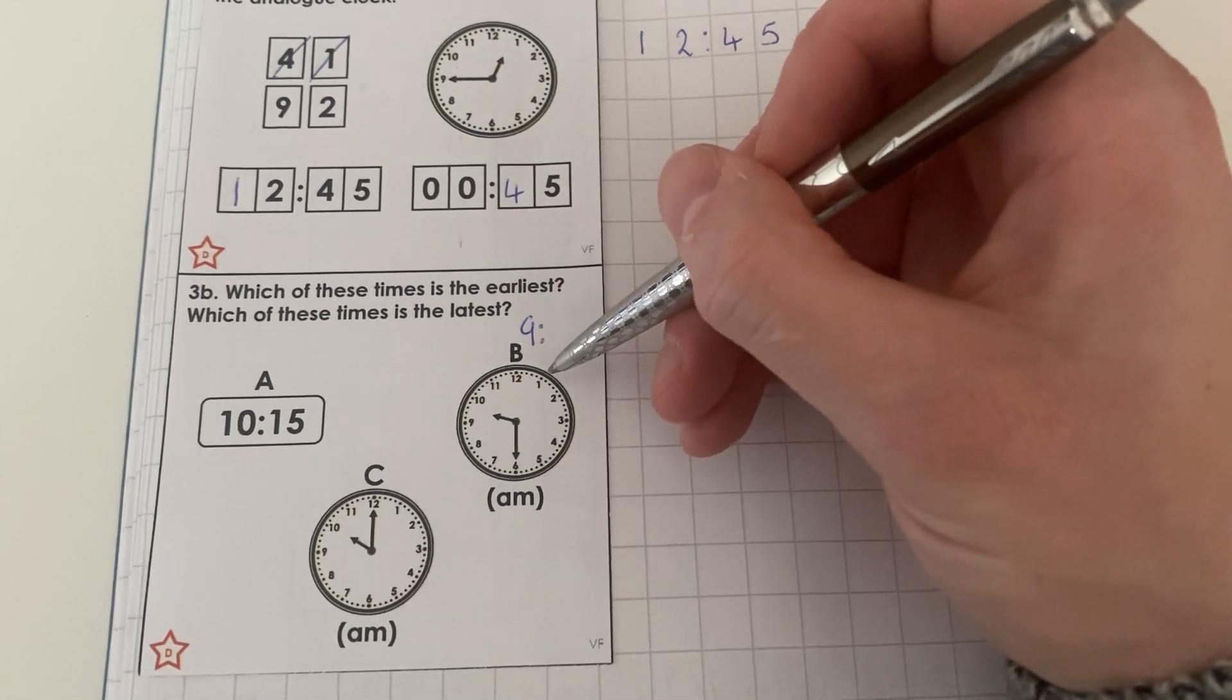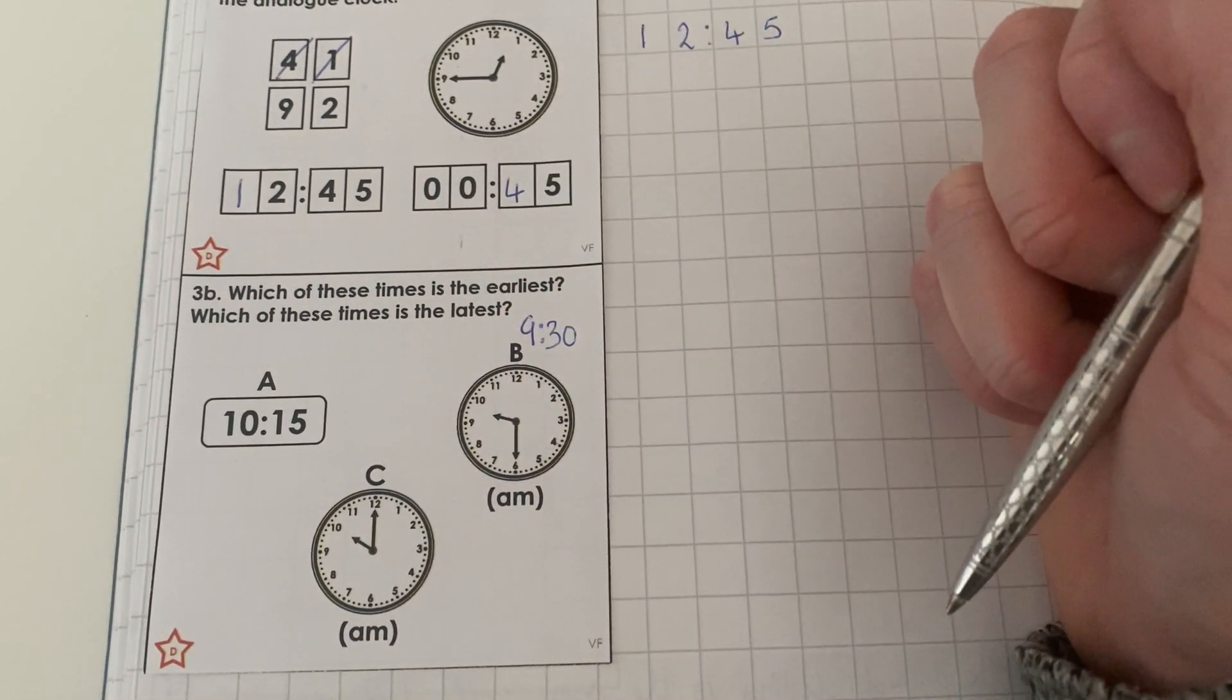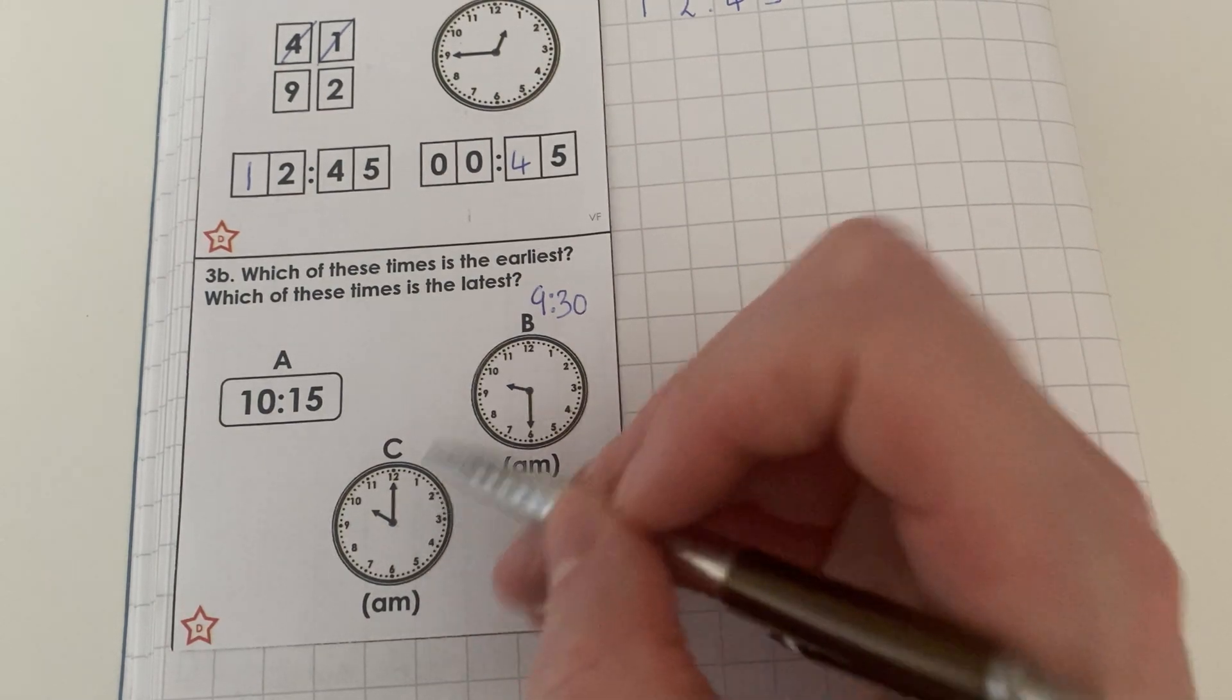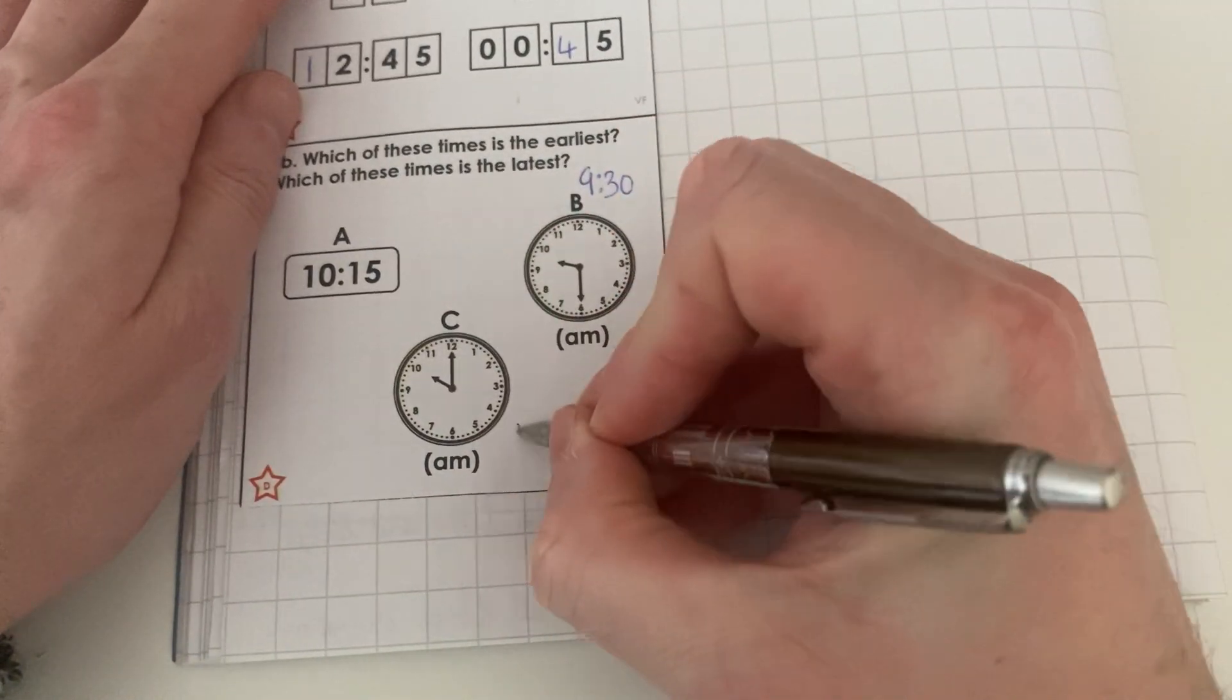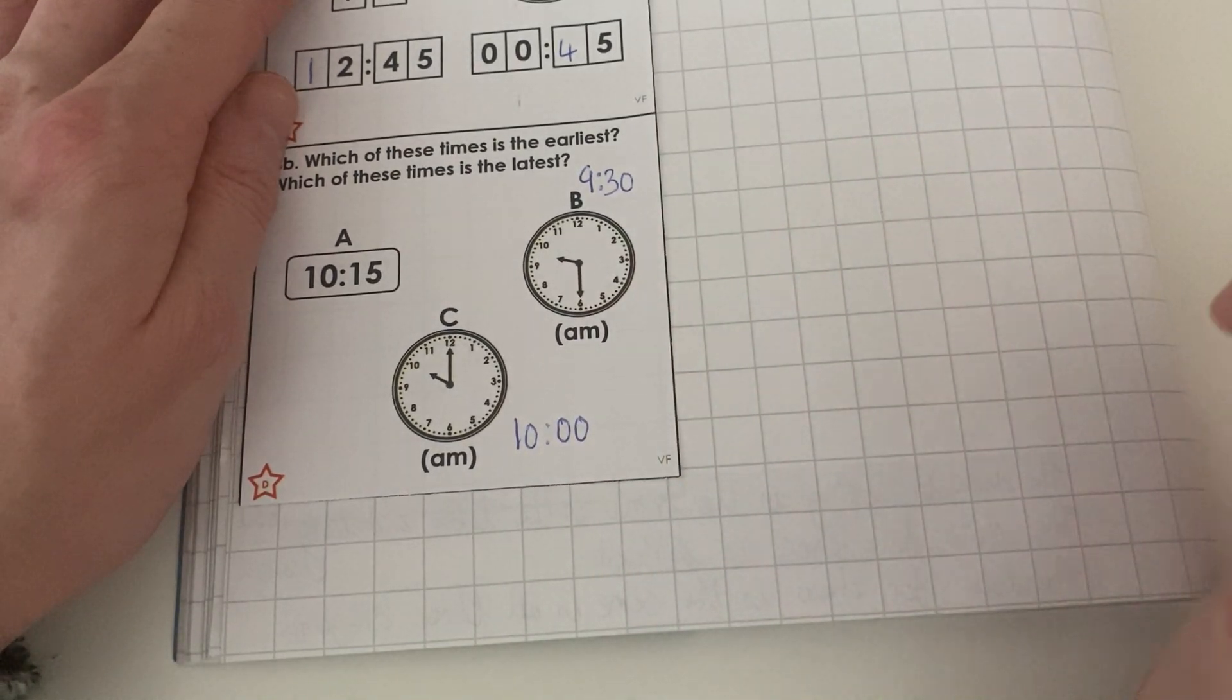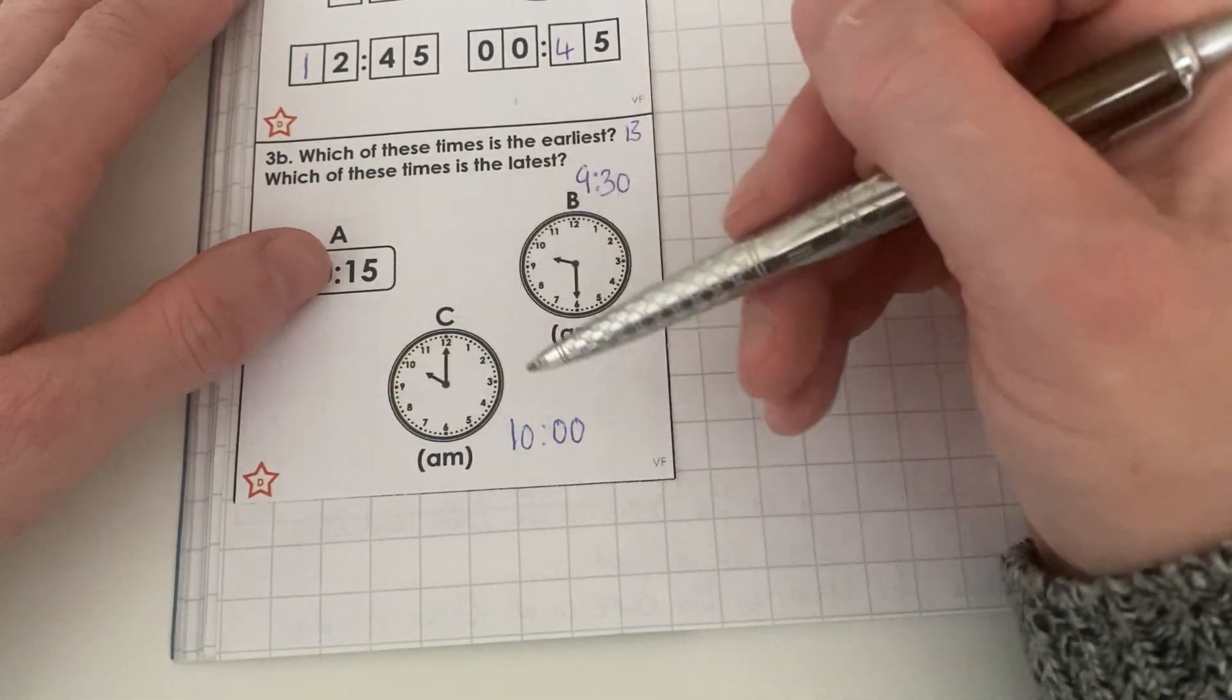And we're going to count up in multiples of five to see how many minutes there are. So zero, five, 10, 15, 20, 25, 30. So 9:30 is earlier than 10:15. So that's our earliest time so far. That's our latest. But we need to check what C is. Now, as we've said, we've seen this clock face already, as we saw it up here. So our hour hand is pointing at 10. And when the minute hand is pointing at its 12, that means it's zero. So it's exactly 10 o'clock. So our earliest time would be 9:30. And our latest time would be 10:15. Because it's 15 minutes later than 10 o'clock.